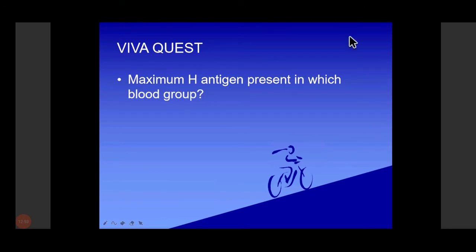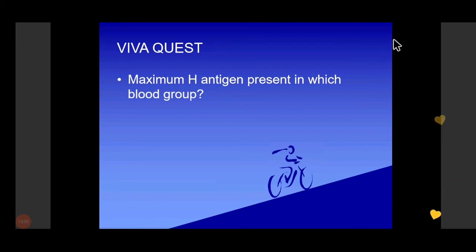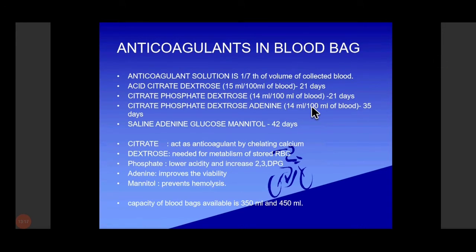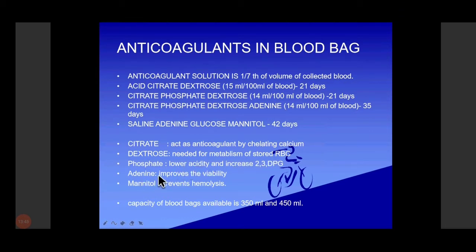Maximum H antigen is present in the O blood group. Now we can discuss anticoagulants used in blood banking. The ratio is 1 to 7. These are the anticoagulants: ACD — acid citrate dextrose; CPD — citrate phosphate dextrose; and SAGM — saline adenine glucose mannitol, a recent anticoagulant with a shelf life of 42 days. Citrate prevents coagulation by chelating calcium. Dextrose supports metabolism of stored red cells. Phosphate increases 2,3-BPG. Adenine improves viability of red cells. Mannitol prevents hemolysis.